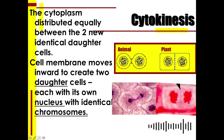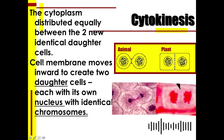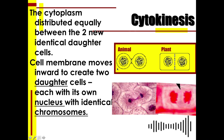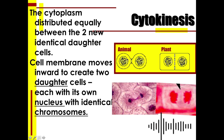Cytokinesis provides and distributes cytoplasm equally between the two new identical daughter cells. The cytoplasm is equally distributed to both cells. The cell membranes move inward to create two daughter cells, each with its own nucleus containing identical chromosomes. The genetic material in one daughter cell is the same as the genetic material in the other.